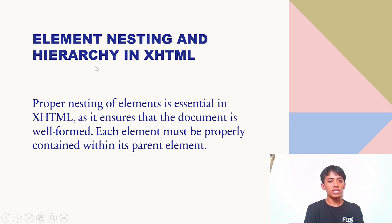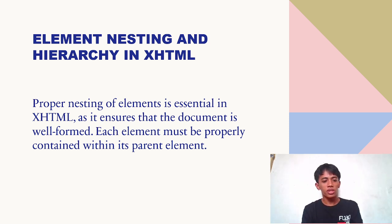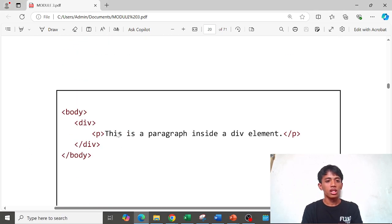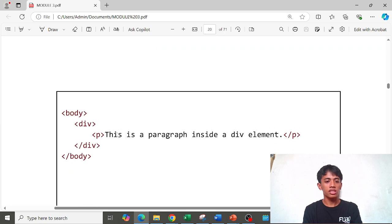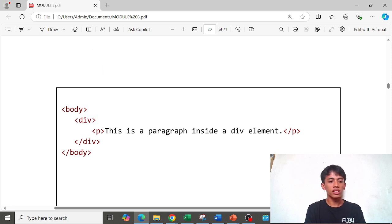Last is element nesting and hierarchy in XHTML. Proper nesting of elements is essential in XHTML as it ensures that the document is well-formed. Each element must be properly contained within its parent. Here is an example of correct nesting: our body tag, inside the body is our div class, and inside the div class is our paragraph.